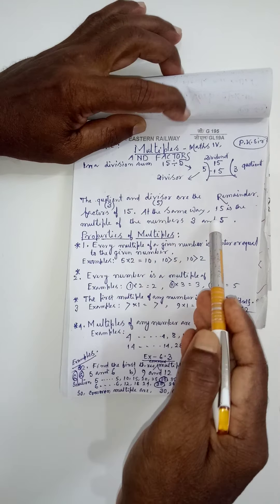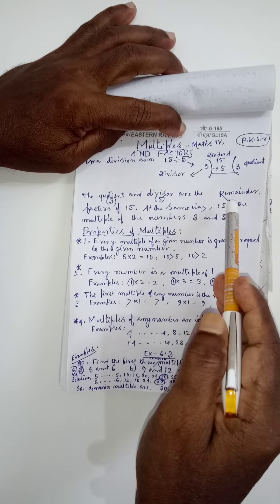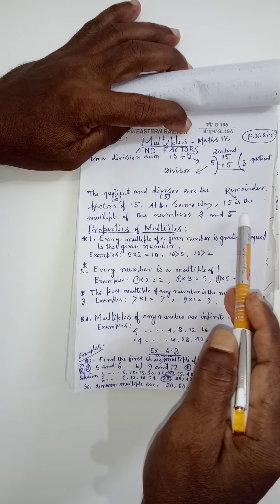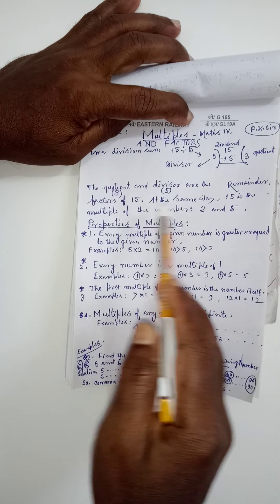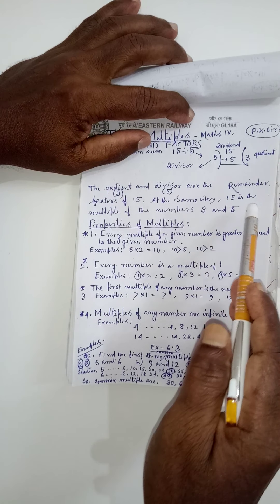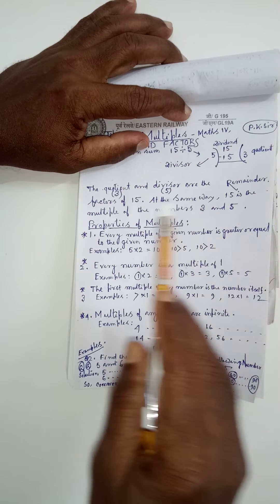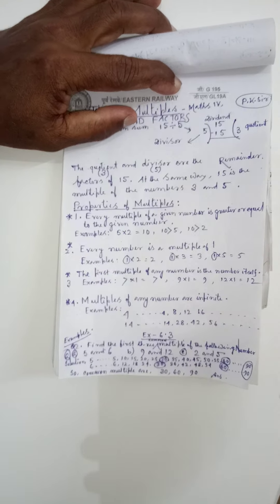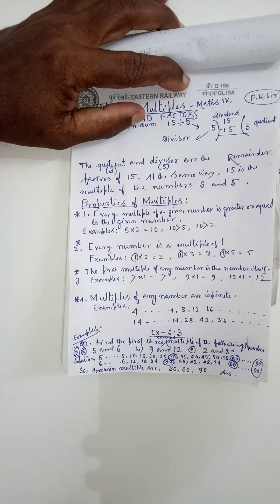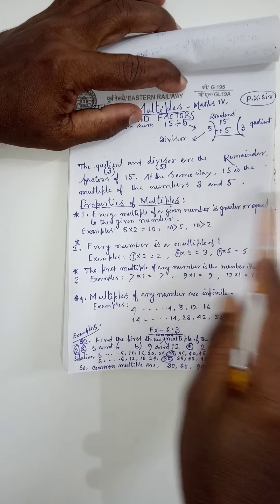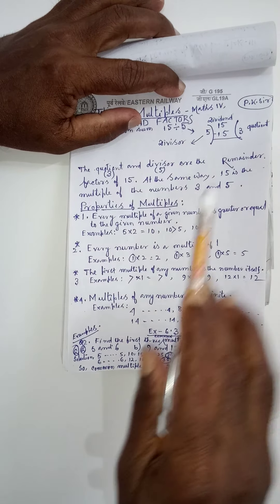In other way, we can tell 15 is the multiple of 3 and 5. Why 15 is the multiple? Because 3 ka table me jitna number aega or whatever the number divisible by 3, they are the multiples of 3. And whatever numbers divided by 5, they are the multiples of 5.